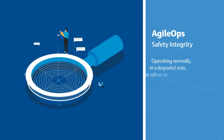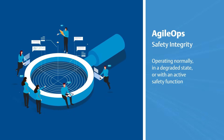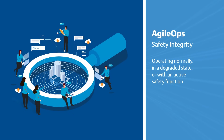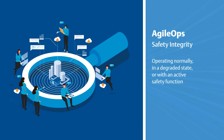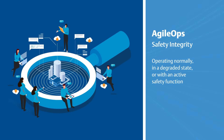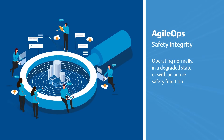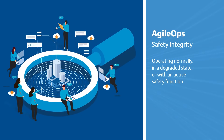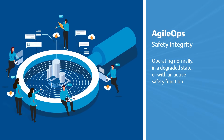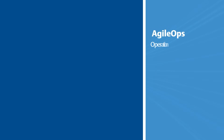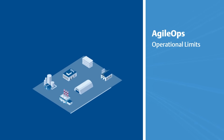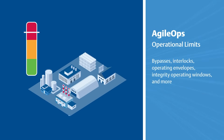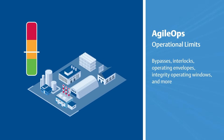AgileOps Safety Integrity, tracking the system health to easily identify and resolve frequently degraded components before SIF operation is compromised. And AgileOps Operational Limits, monitoring operational parameters to determine normal state violations.